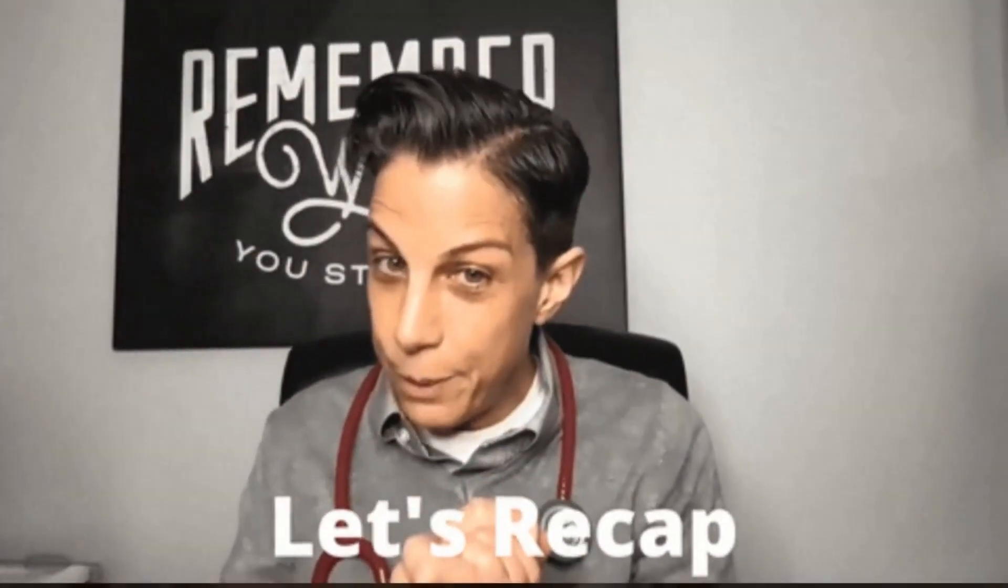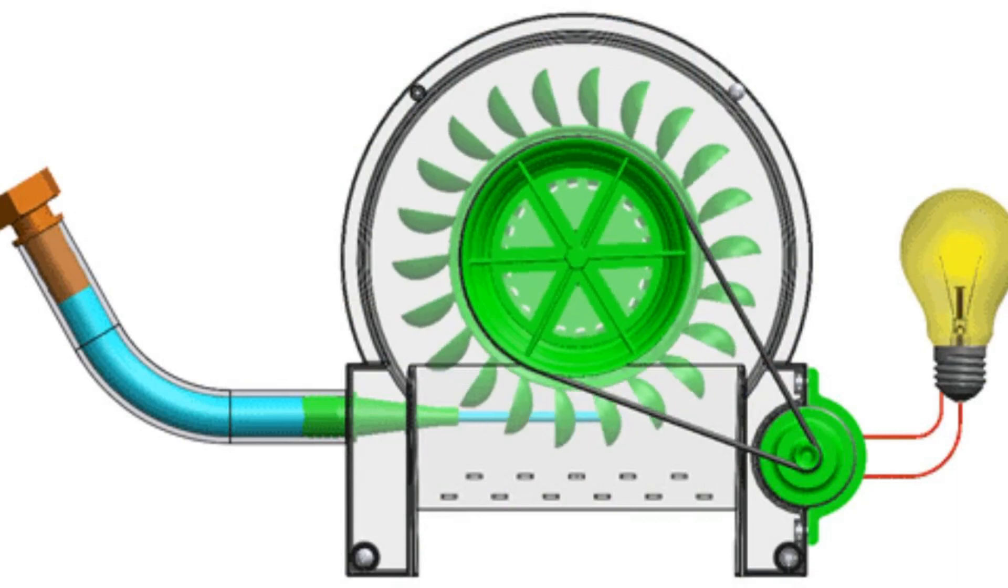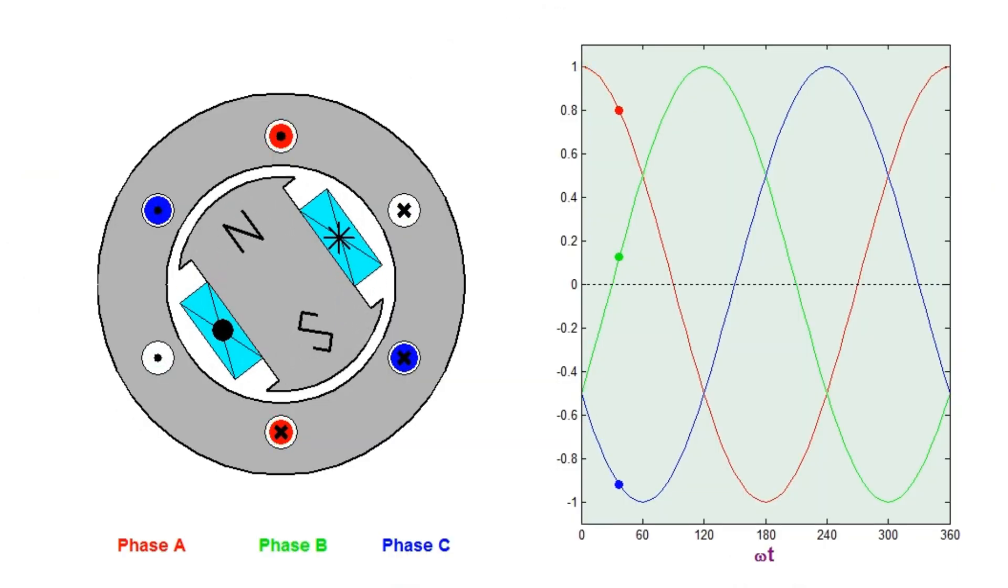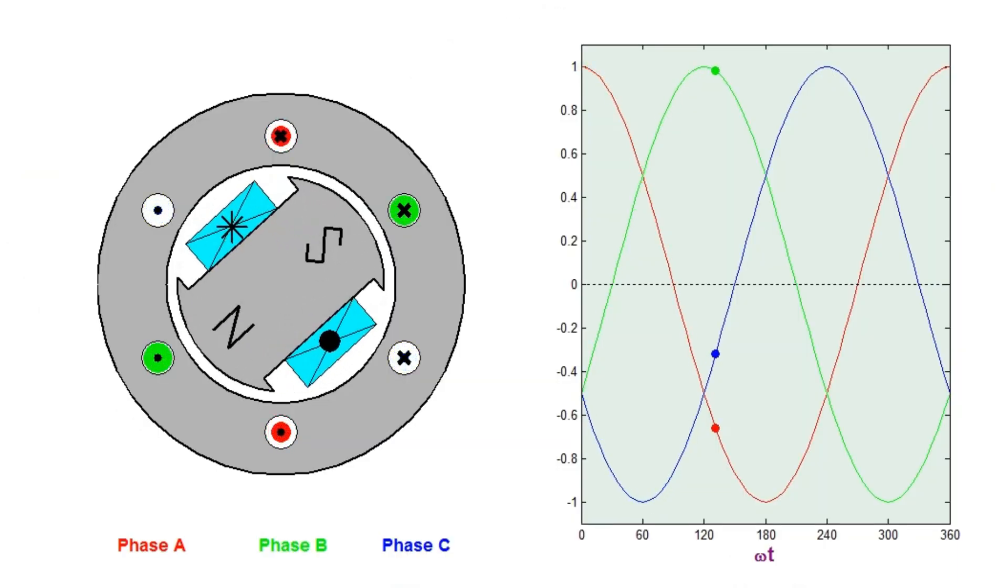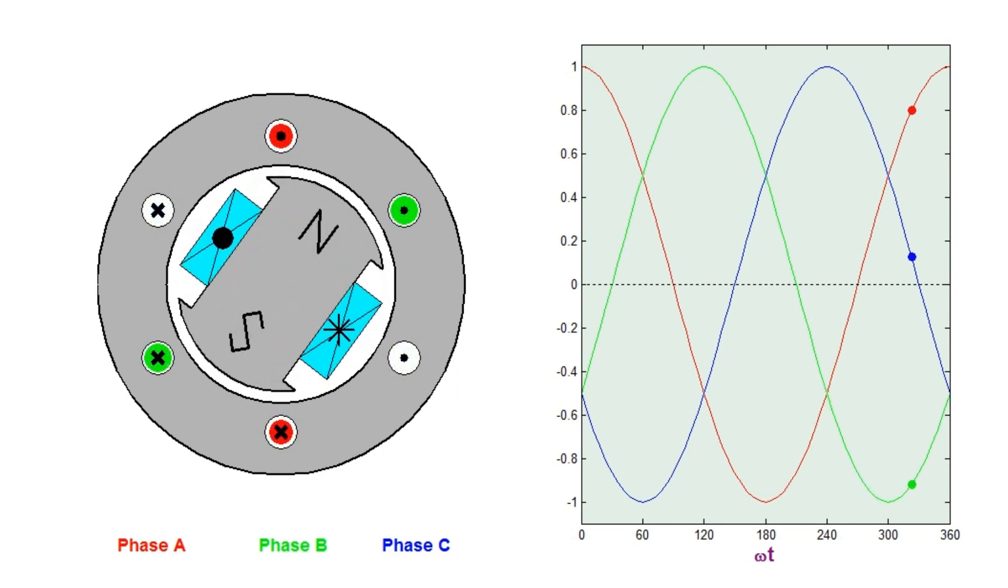So, to recap, a synchronous generator is a master of conversion, transforming mechanical energy into electrical energy. It does this through the physics principle of electromagnetic induction, with a rotating magnet inside a stationary coil, creating a changing magnetic field.